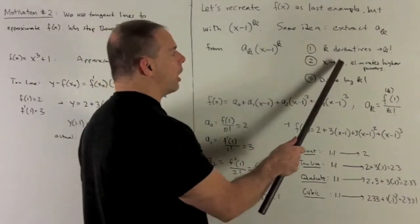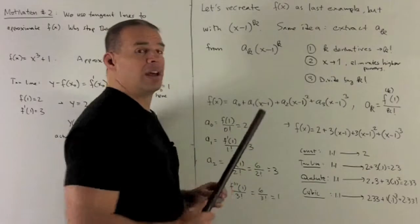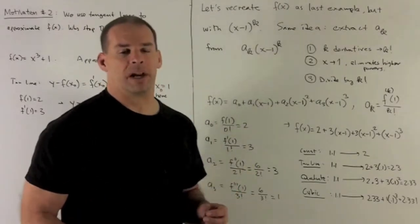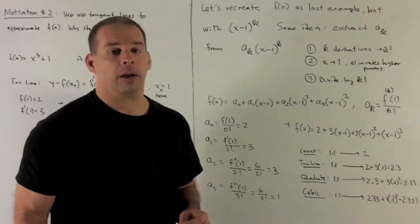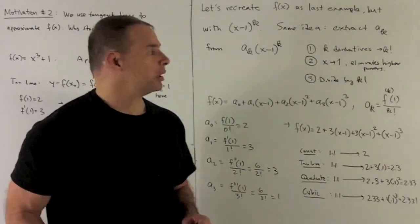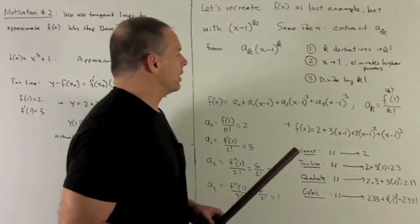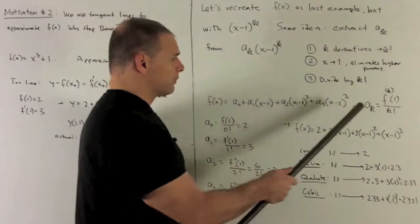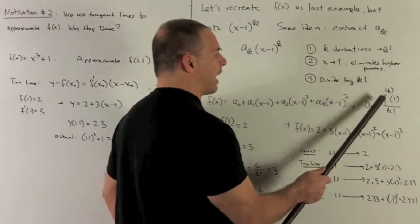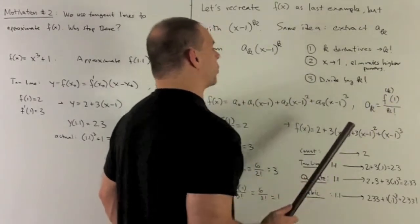So we'll want to evaluate this at 1. Taking k derivatives, that's going to keep bringing k's down. So it'll be k, k minus 1, k minus 2, all the way down to 1. So we'll want to get rid of that k factorial that's going to accumulate. To isolate a sub k, a sub k is equal to the kth derivative of f evaluated at 1 divided by k factorial.